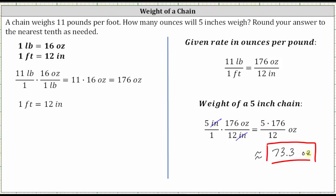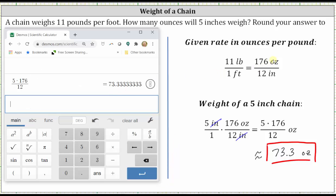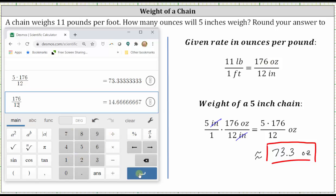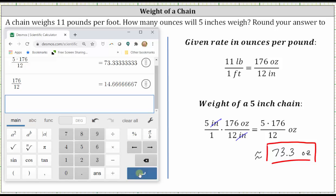Now I do want to mention here, notice how I did not find the unit rate in ounces per inch, and then use the rounded unit rate to determine the weight of the five inch chain. If we did take this approach, we would have more of an error in our answer. If we go back to the calculator, to find the unit rate in ounces per inch, we would divide 176 by 12. If we rounded this to the tenths place value,